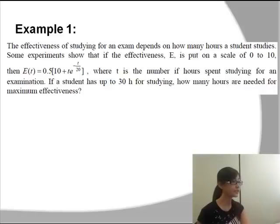Then we have the function E(t) equals 0.5 times in bracket 10 plus t times e to the power of negative t over 20, where t is the number of hours spent studying for an examination.